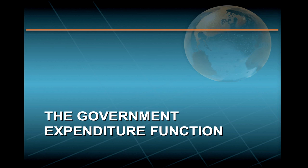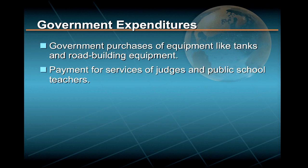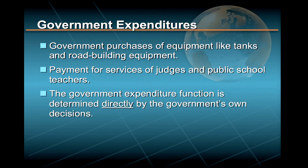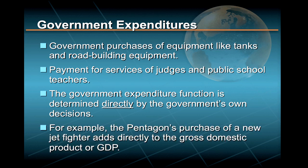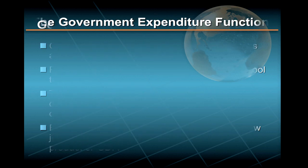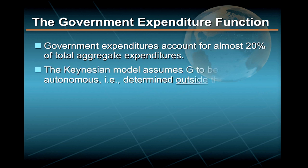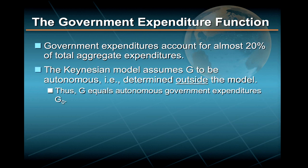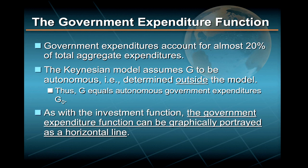The third component of aggregate expenditures in the Keynesian model is government spending. This includes purchases of goods like tanks or road building equipment, as well as the services of judges and public school teachers. Unlike private consumption and investment, this component of aggregate demand is determined directly by the government's spending decisions. Such government expenditures account for almost 20% of total aggregate expenditures in the U.S. The Keynesian model assumes government expenditures to be autonomous — that is, determined outside the model — meaning algebraically that government expenditures G simply equal autonomous government expenditures G-naught.